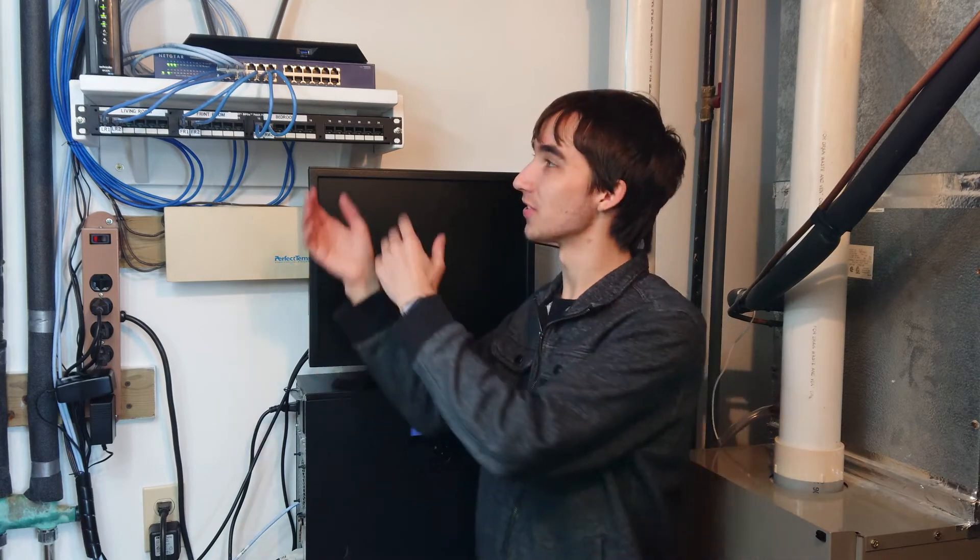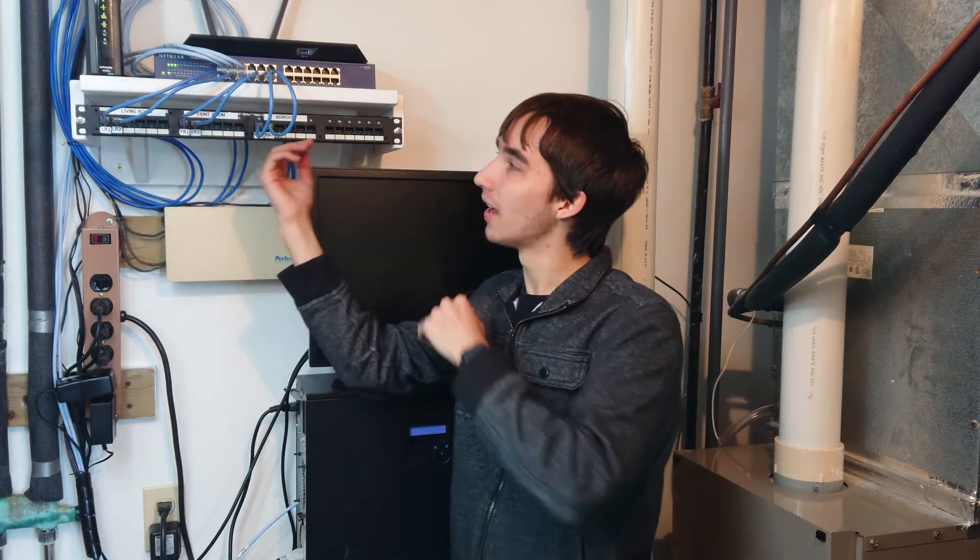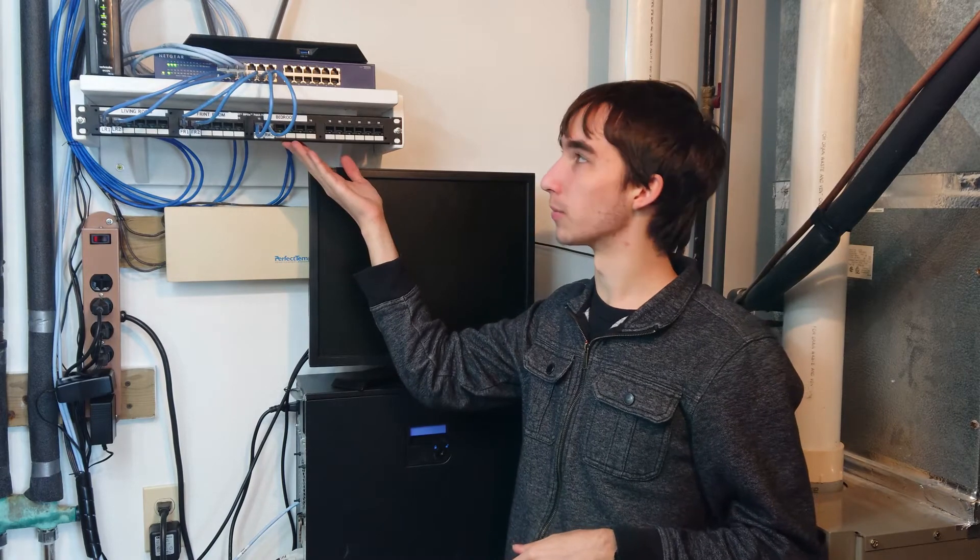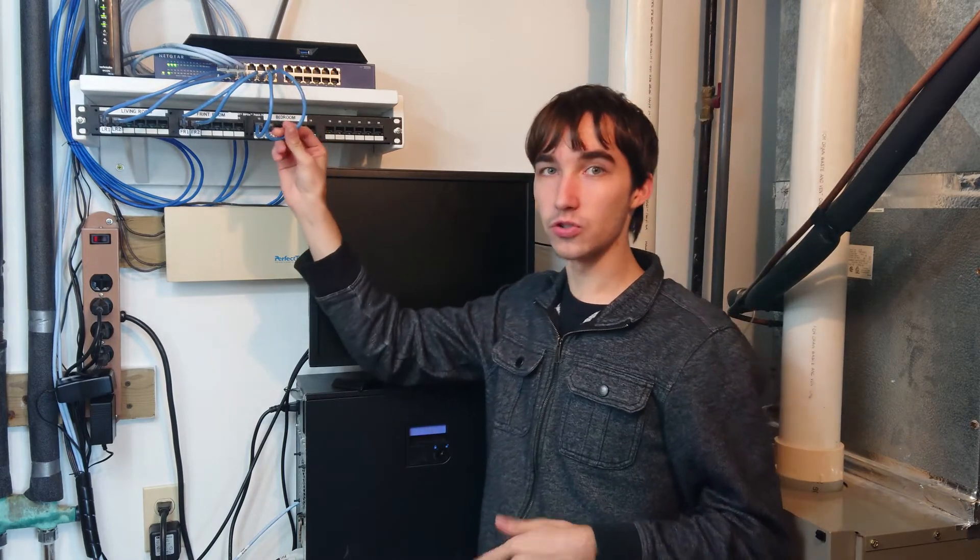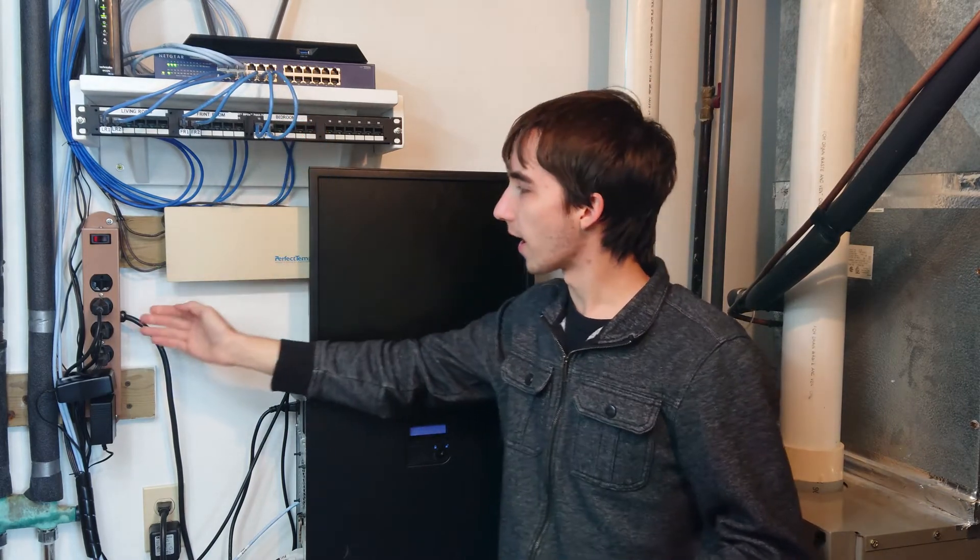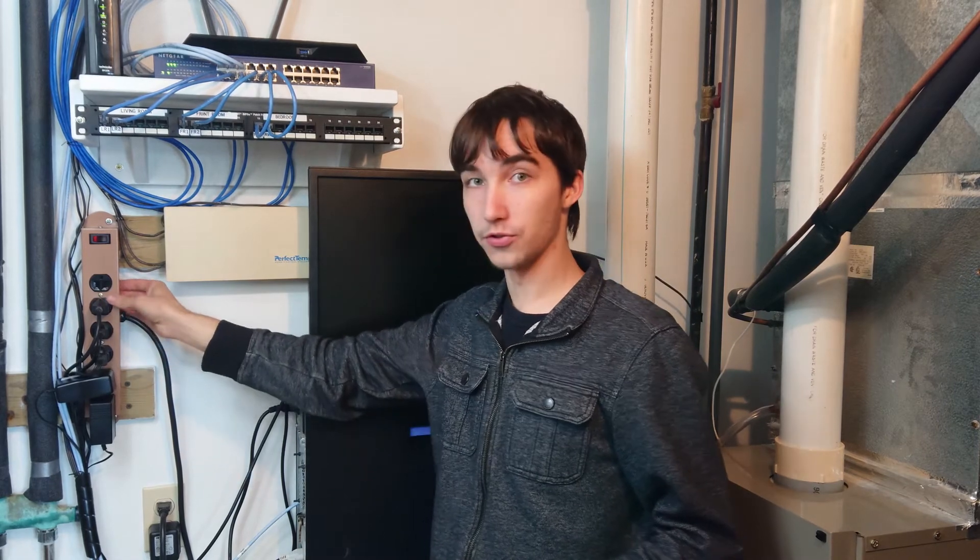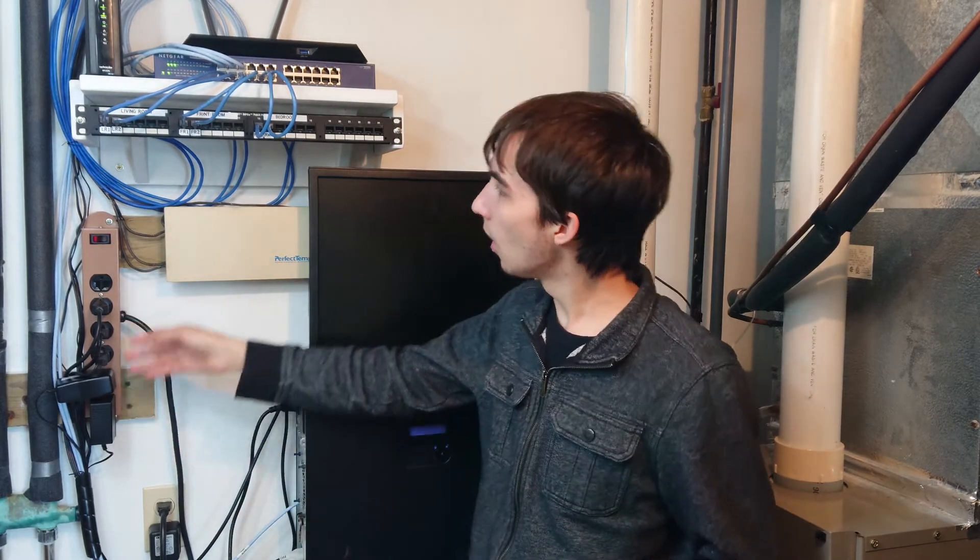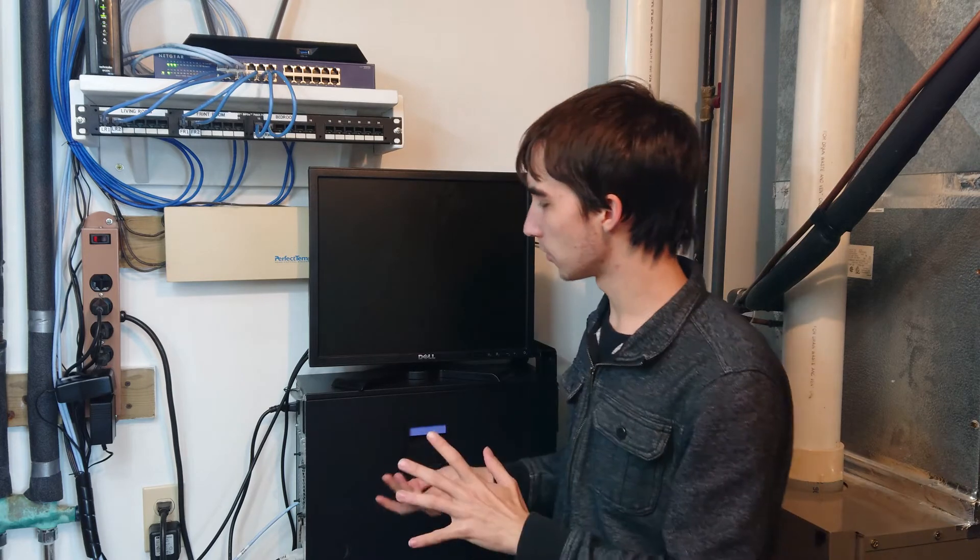And here is the finished server room. So as you can see, we have the patch panel up and it is labeled with all of our different labels here. Got these nice short little patch cords. And we've got this nice surge protector built in, mounted on the wall here, so that way all the devices are protected against surges. And most of the cable management's done, though there'll still be a little bit more to do. But the server's up and running, so let's go and get into it.